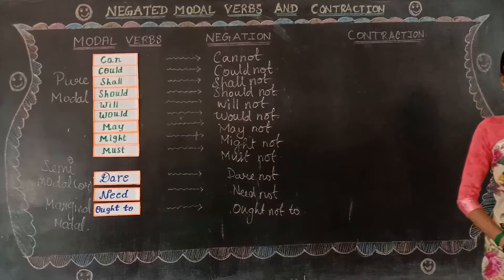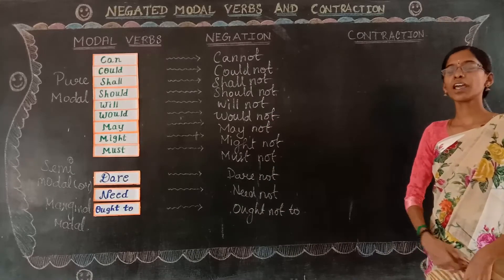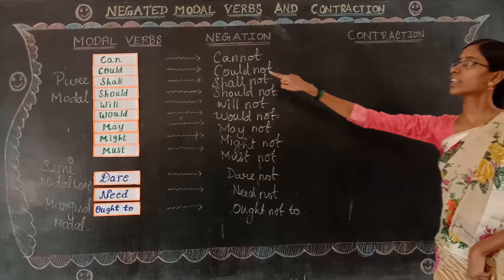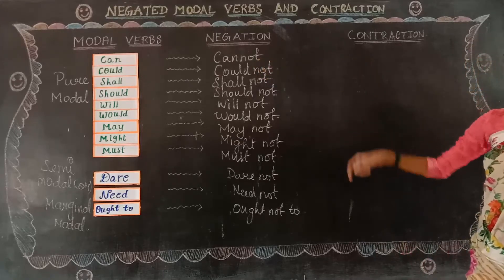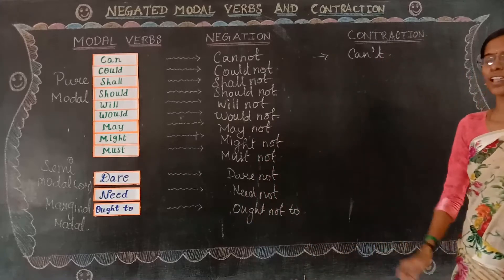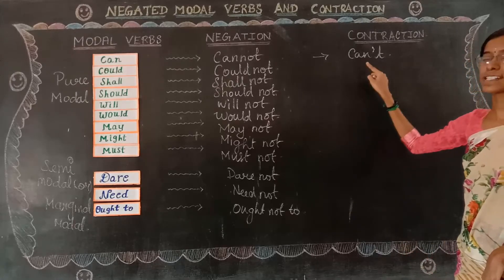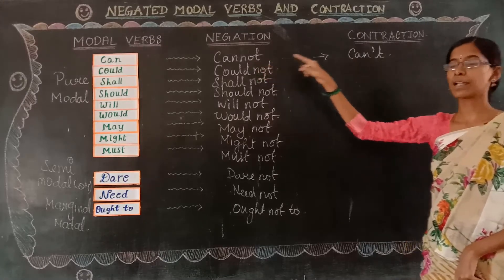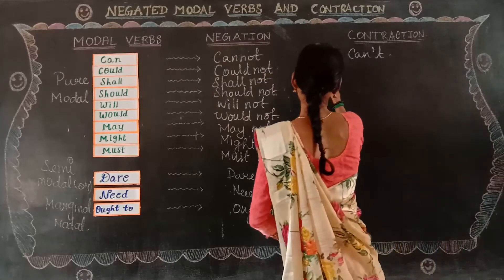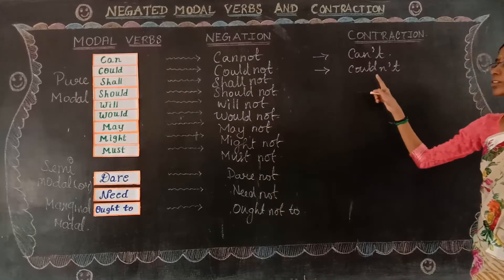Now coming to contraction. Contraction means making things smaller — making the modal words into a short form. The negative form 'cannot' can be written in contracted form as 'can't' (can apostrophe T). You can see these contracted words in many textbooks and we also write them in our sentences. Similarly, 'could not' is contracted as 'couldn't.'